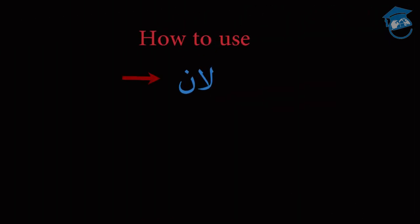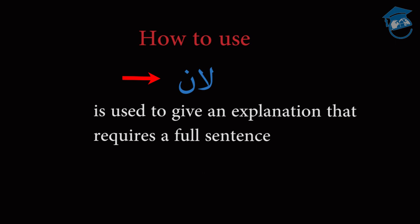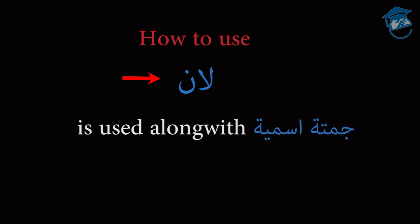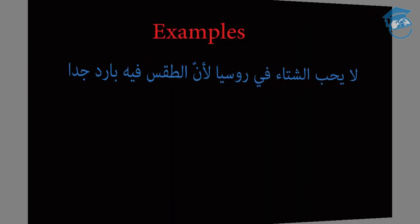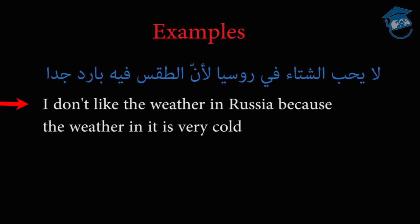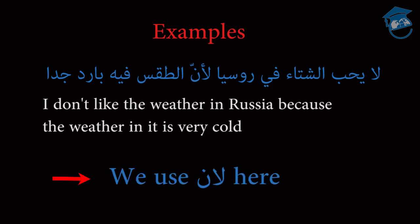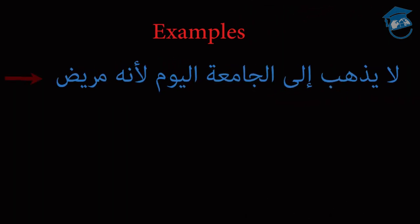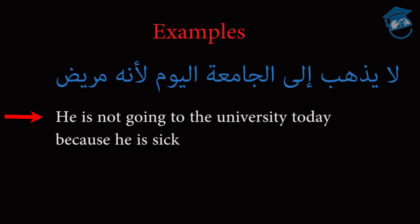Now let's look at how we use li'enna. Li'enna is used to give an explanation that requires a full sentence — li'enna plus jumla ismiya. For example: I don't like the weather in Russia because the weather in it is very cold. A taksfihi barajiddin is a full sentence, so we use li'enna. In the second example: He's not going to the university today because he is sick. La'enna hu maridun is a full sentence, so we use li'enna.